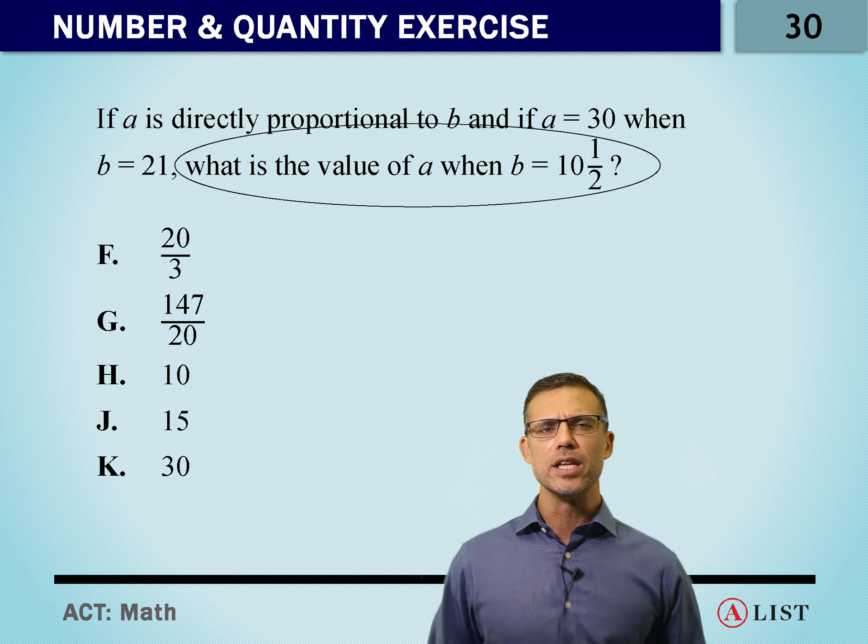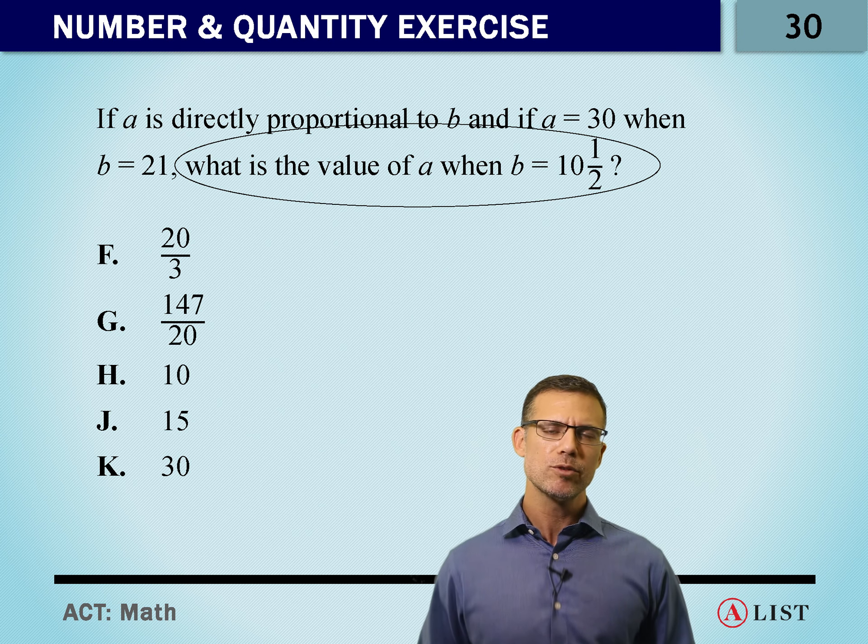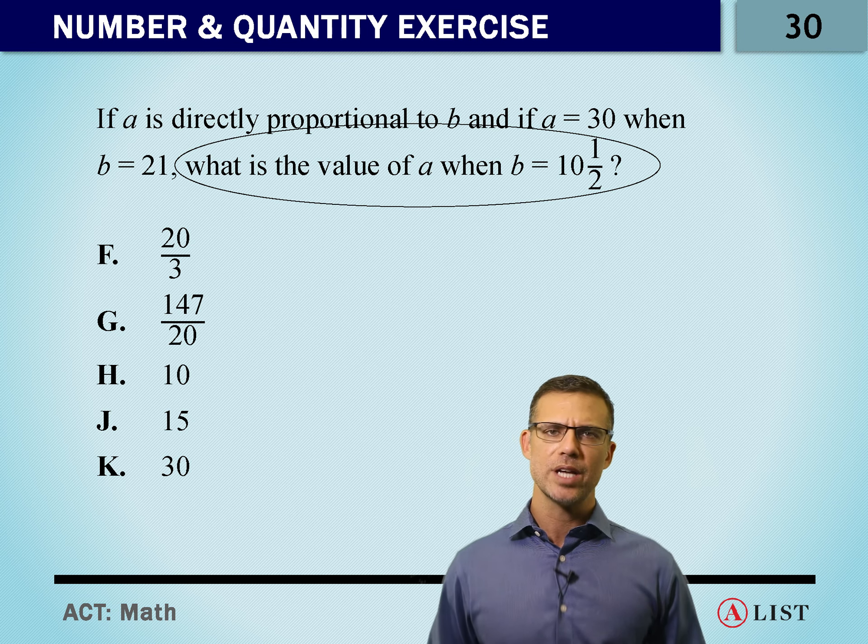When we take a look at the end of this question, we've got to compare A and B, but in order to do so, we have to remember our vocabulary. What does directly proportional mean? That means we have to set up a standard proportion of A over B.